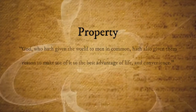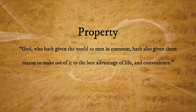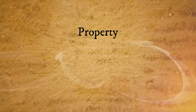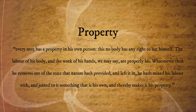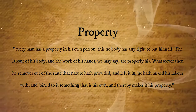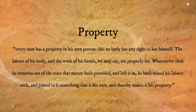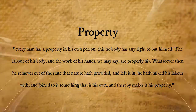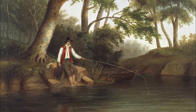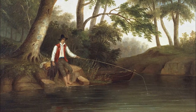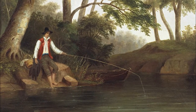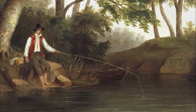Men have a right to property, because God, who hath given the world to men in common, hath also given them reason to make use of it to the best advantage of life and convenience. Property may seem a strange right, but Locke explains: 'Every man has a property in his own person. This nobody has any right to but himself. The labor of his body and the work of his hands are properly his. Whatsoever then he removes out of the state that nature hath provided and left in it, he hath mixed his labor with, and joined to it something that is his own, and thereby makes it his property.' This is essentially appropriating the land and its fruits to preserve life. To appropriate just means to make something your property — you must do it to live, and no one has a right to stop you. Mixing your work with something by using your body is what makes something yours.